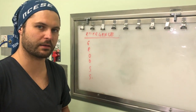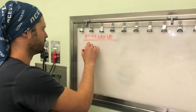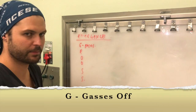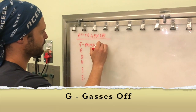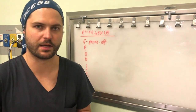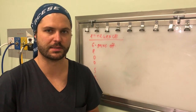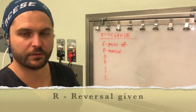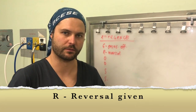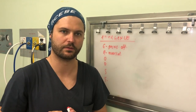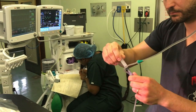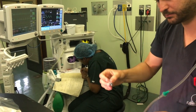G is for gases off — turn your gases off. You'll learn with experience when to start turning gases off so the patient wakes up in time. R stands for reversal — make sure the patient is reversible using your nerve stimulator and that you've given the correct dose of reversal agent before the patient wakes up.